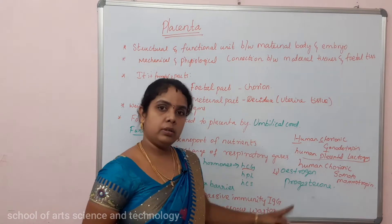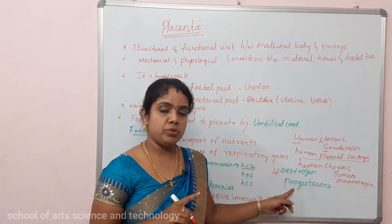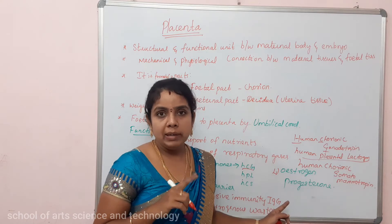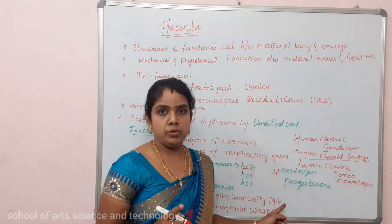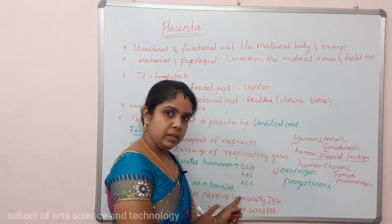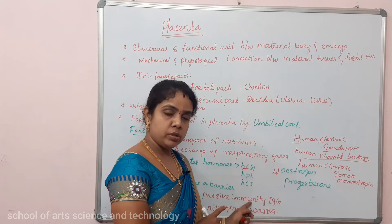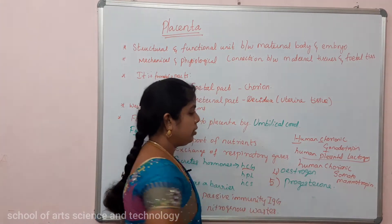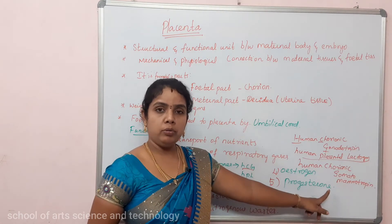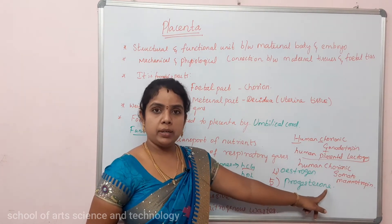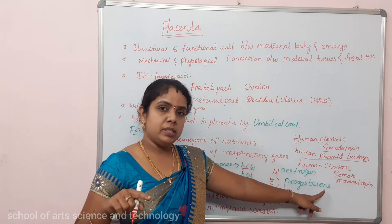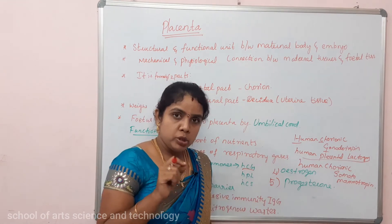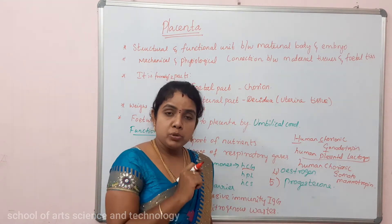Human Chorionic Somatomammotrophin is also secreted. Additionally, the developing follicle cells secrete estrogen hormone. The fifth hormone is progesterone, which is very important throughout the pregnancy.